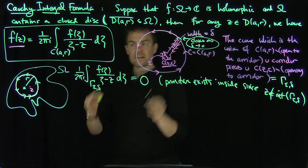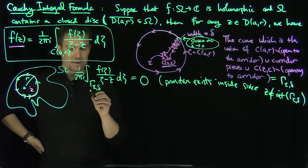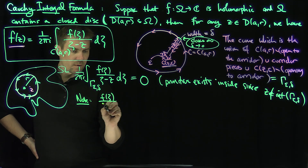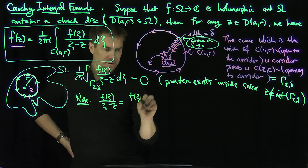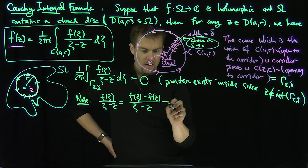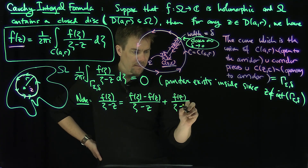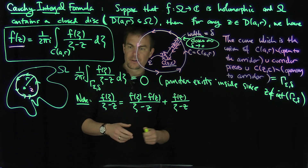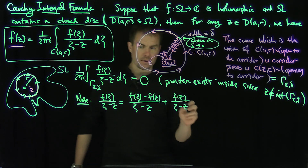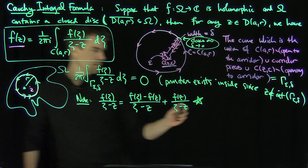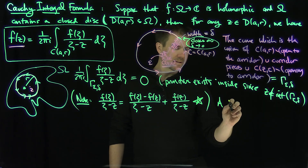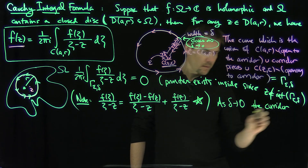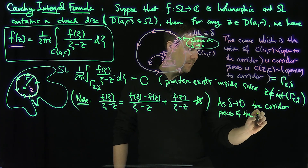Now I want to figure out what the individual components contribute. The key decomposition we'll use is: f(ζ)/(ζ−z) equals [f(ζ)−f(z)]/(ζ−z) plus f(z)/(ζ−z). As delta goes to zero, the corridor pieces of the contour cancel — they approach the same line with opposite orientations, one going toward the large circle and one away, so they're equal and opposite and cancel. This leaves two pieces to contribute.